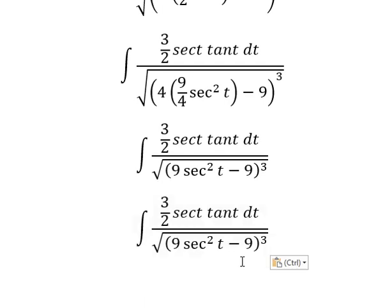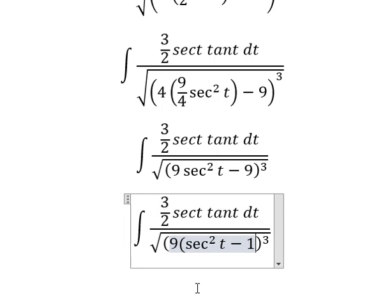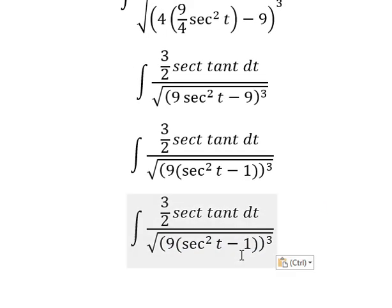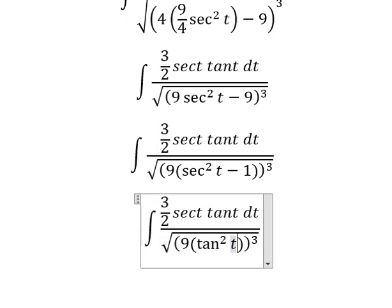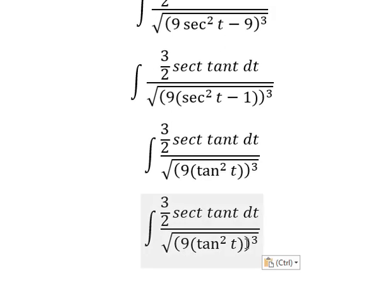So number 9 and number 9 we can do factorization. And this one, that is tangent squared t. So 9 to the power of 3 with the square root, we get 27.